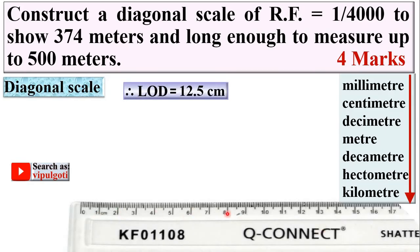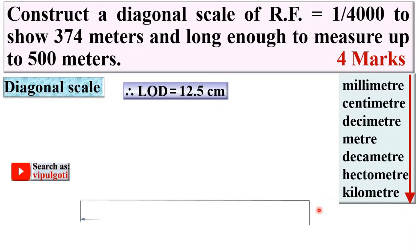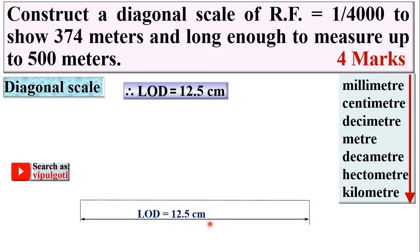Take a scale and draw a horizontal line of 12.5 centimeters. The length of this line is 12.5 centimeters, and this is actually the length of drawing — length of drawing equals 12.5 centimeters.